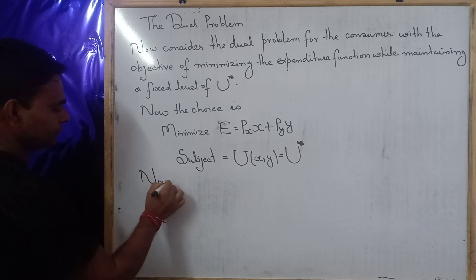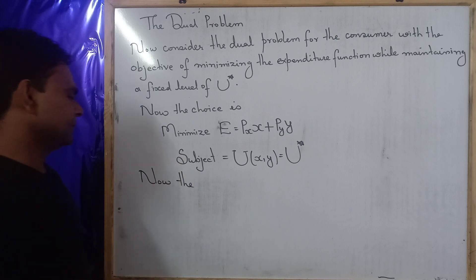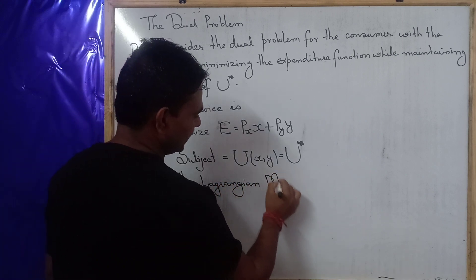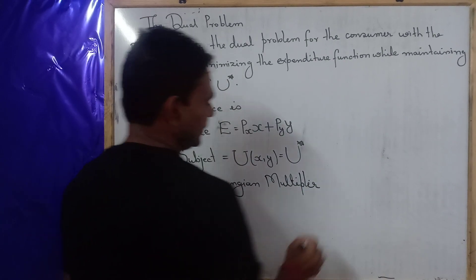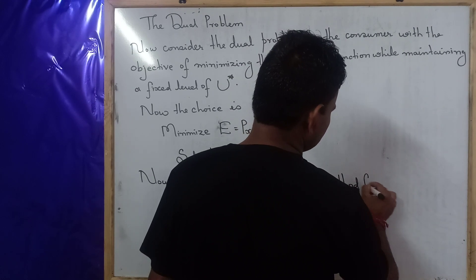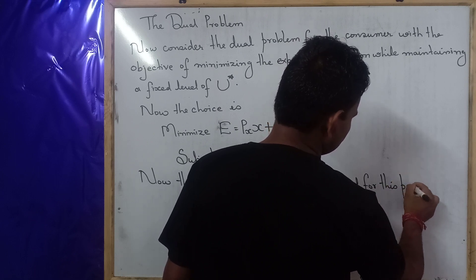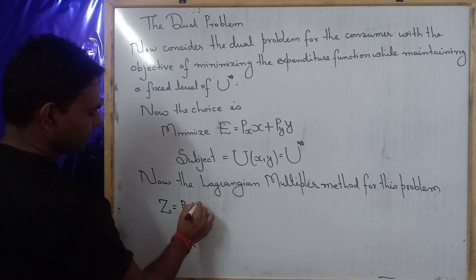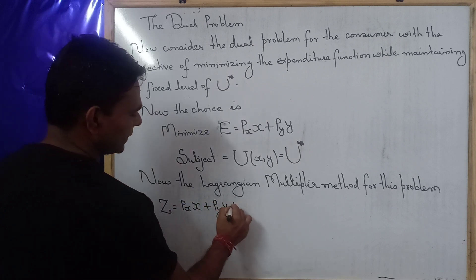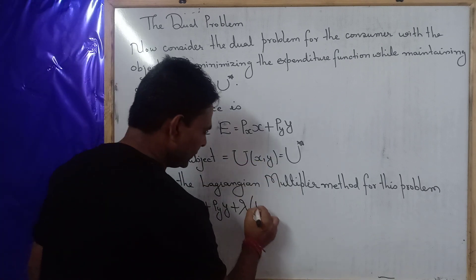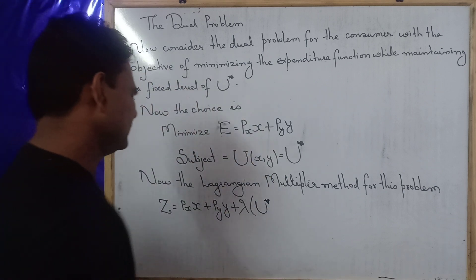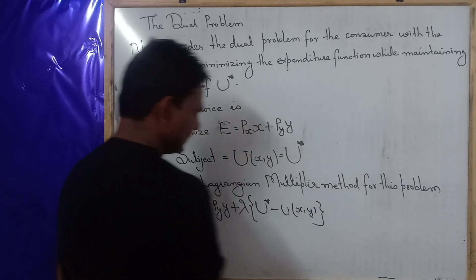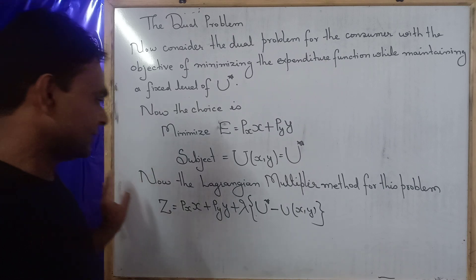The Lagrangian multiplier method for this problem gives us: Z = Px·x + Py·y + λ[u* − U(x, y)]. This is the Lagrangian formulation for the expenditure minimization problem.